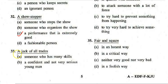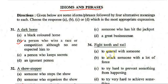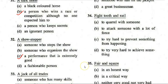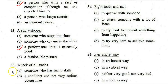Next idiom: 'Jack of all trades.' Options: A. Someone who has many skills, B. A confident and not very serious young man, C. Someone who has hit the jackpot, D. A great businessman. The correct answer is A — someone who has many skills.